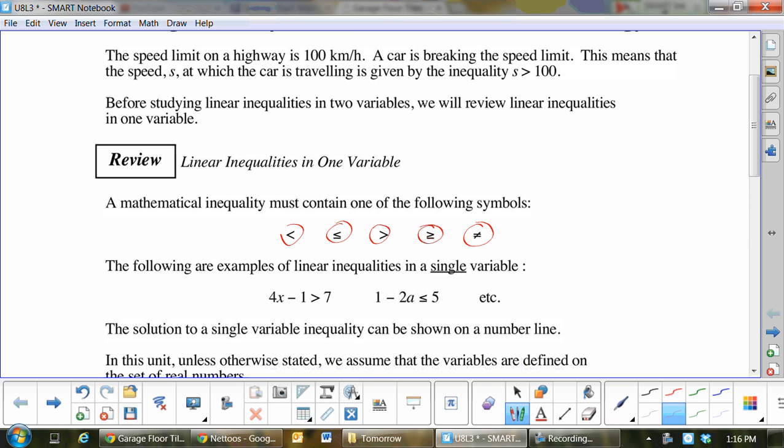Now, the way we would say this is 4a minus 1 is greater than 7, or 1 minus 2a is less than or equal to 5. Okay, so we're saying what variables can be put on the left to make it either less than or equal to 5. Okay, let's go to the next page.